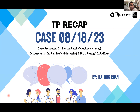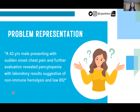Hi everyone, thank you Ibrahim. My name is Hua Ting and I'm going to do a TP Recap from a case on August 18th, presented by Dr. Sanjay and discussed by Dr. Rabbi and Professor. The problem representation is a 43-year-old male presenting with sudden onset chest pain. The patient's past medical history, family history, social history, and physical exam were within normal limits, but further evaluation revealed pancytopenia, and lab results suggested non-immune hemolysis and a low B12.